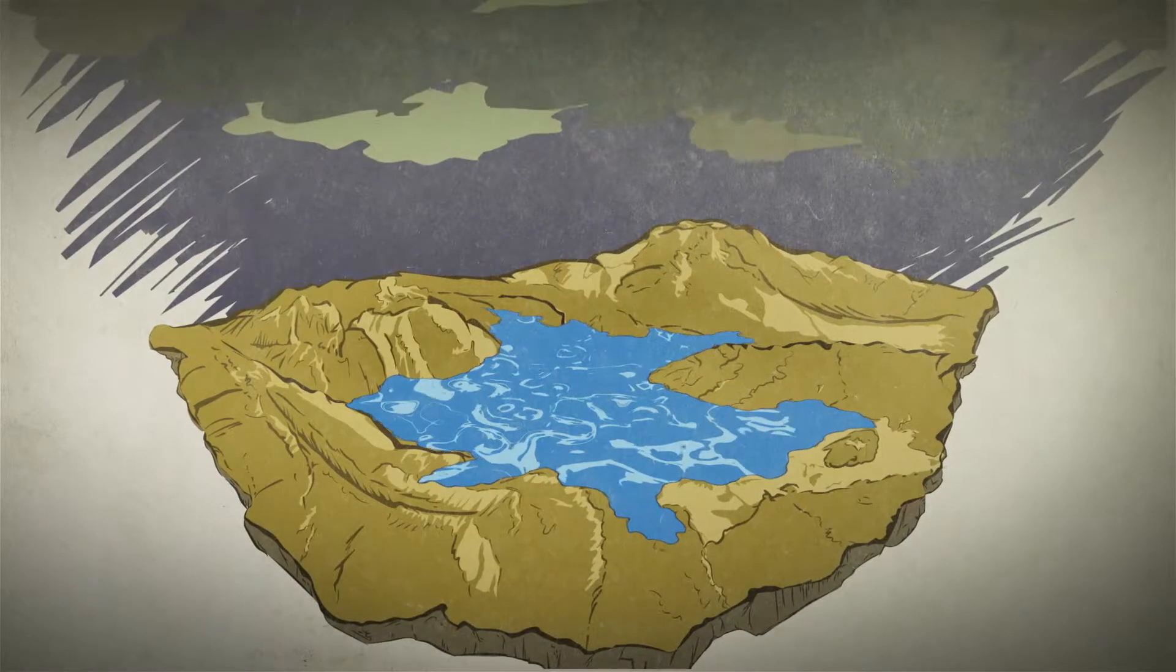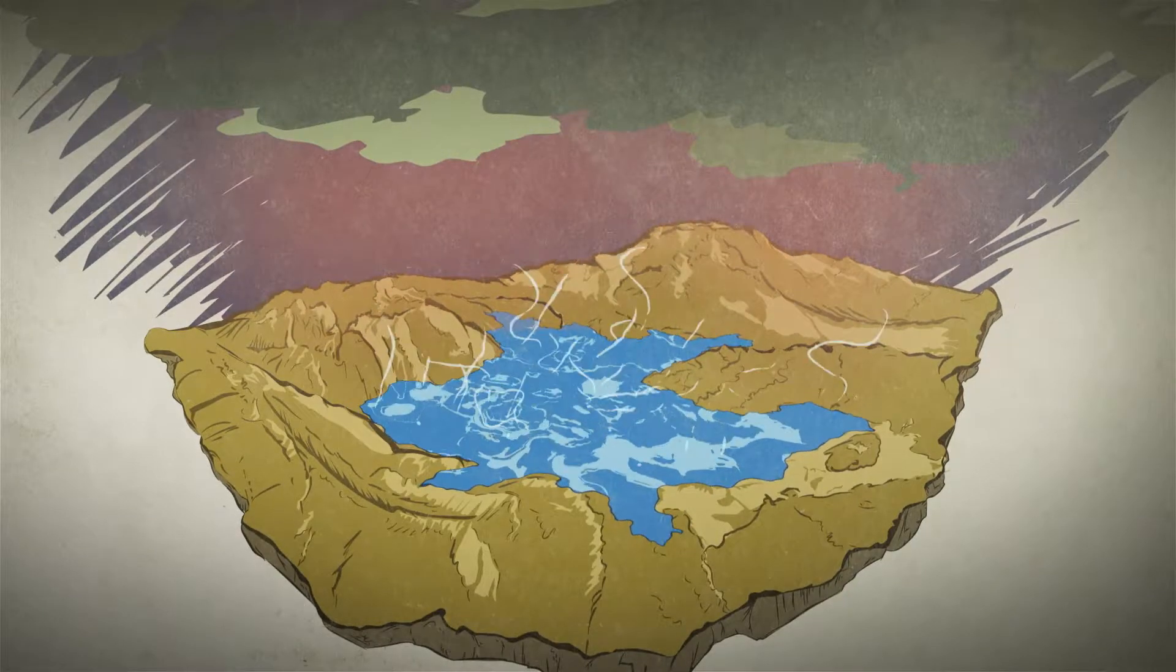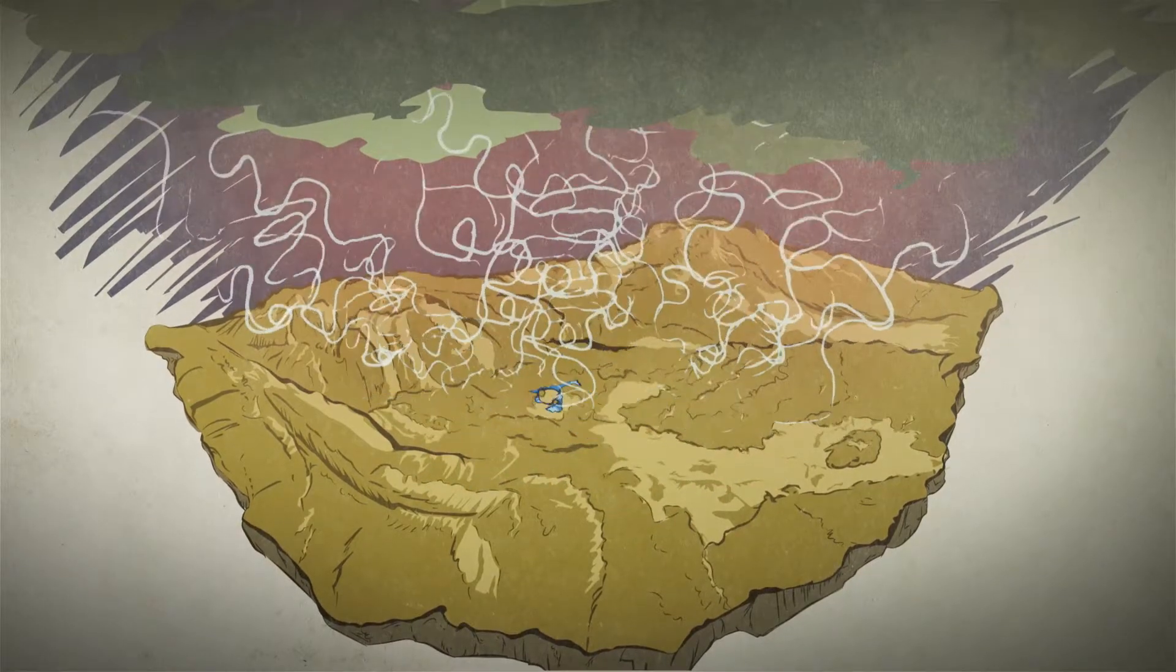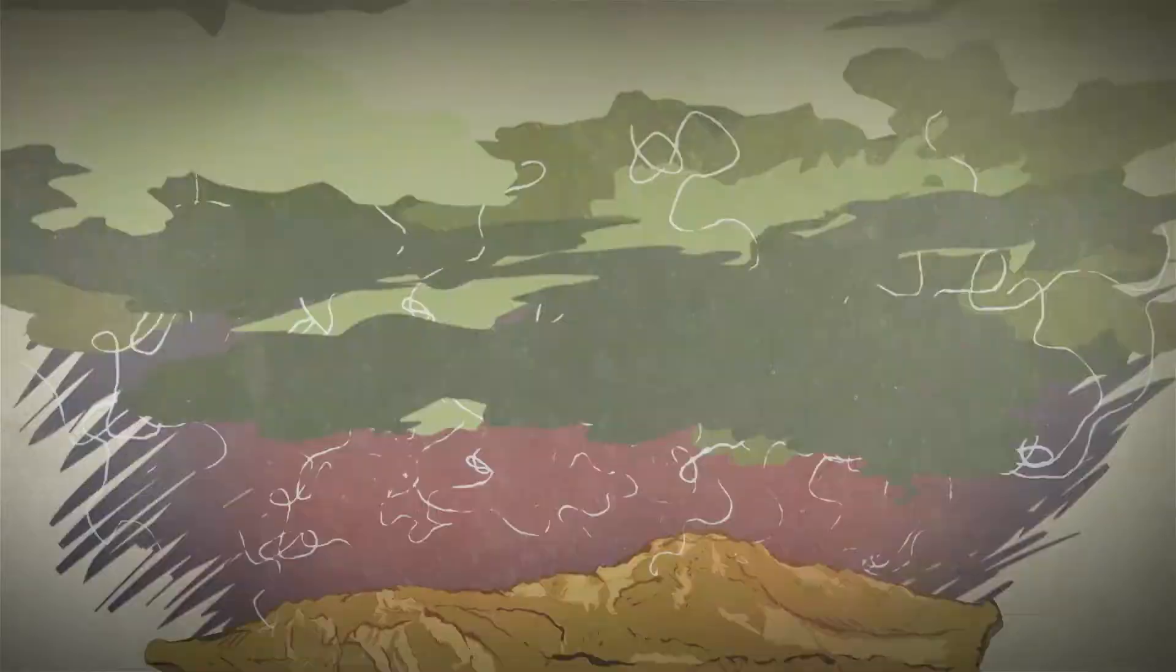you would never expect there to be liquid oceans on the surface. That kind of temperature only boils off that water into steam, but the atmosphere of Venus is still incredibly dry. So where did the steam go?